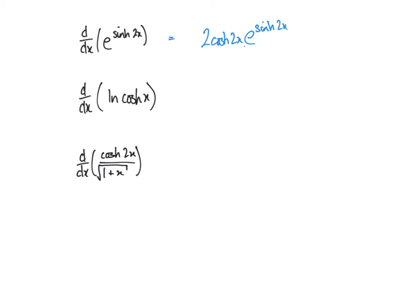For the log example, when we differentiate a log we get f dash of x over f of x. The function here is cosh x, and when we differentiate cosh x we get sinh x. So the result is sinh x over cosh x, which we know is tanh x. So when we differentiate the log of cosh x, we get tanh x.